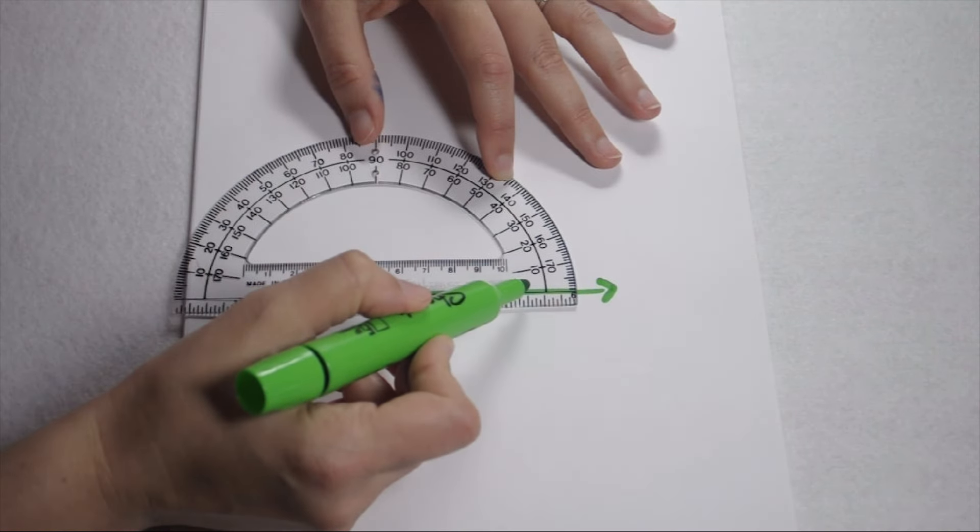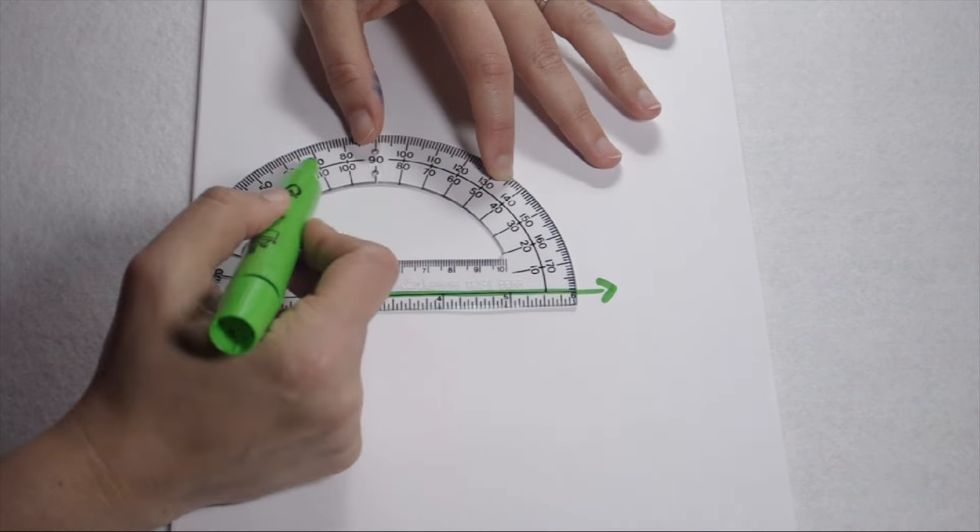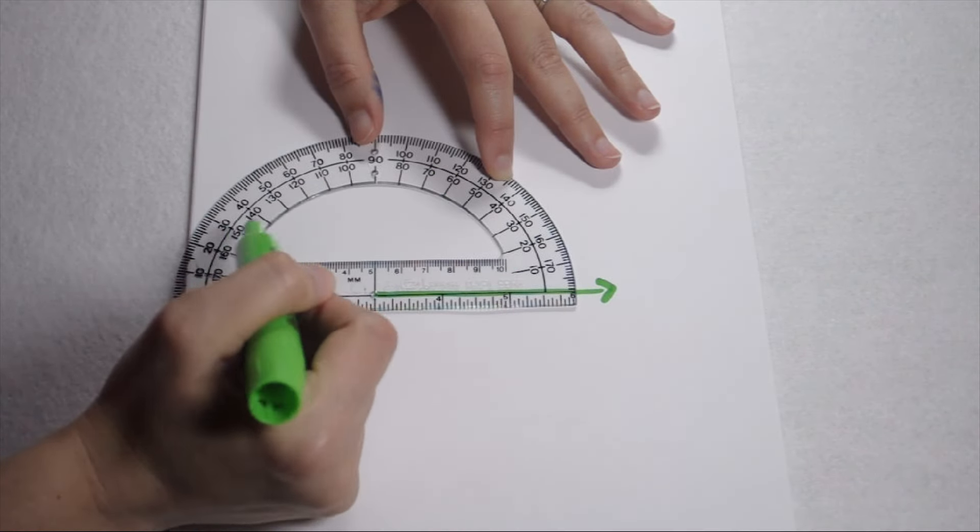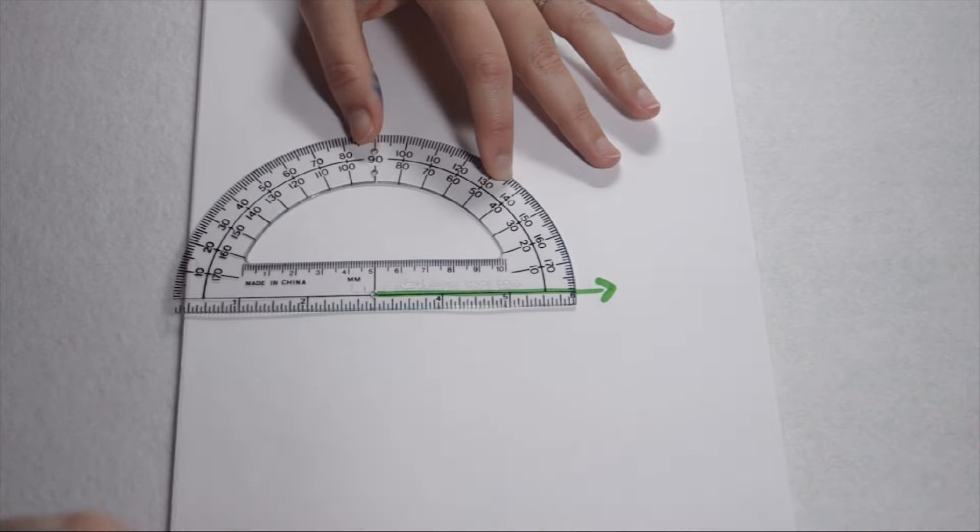My other choice is look at where my bottom ray is. This would be considered zero degrees, and then my angles need to increase from there. To do that, I would have to follow the inside arc, meaning again, I would be using this 50 degrees.